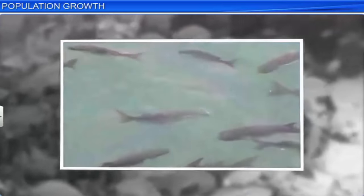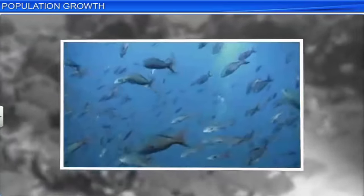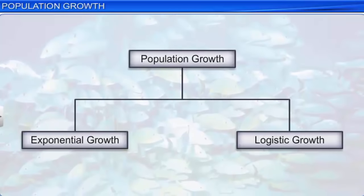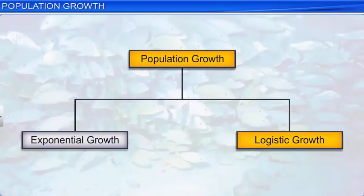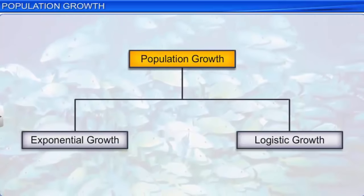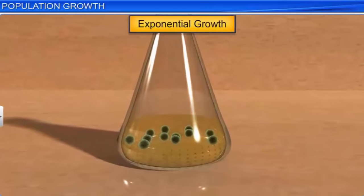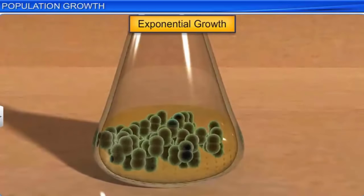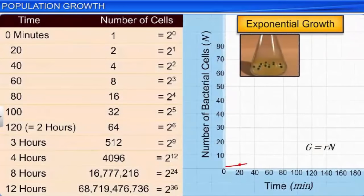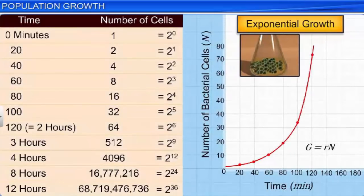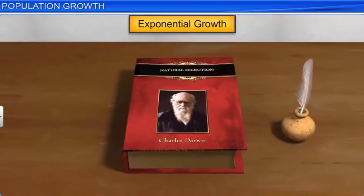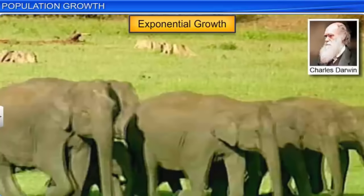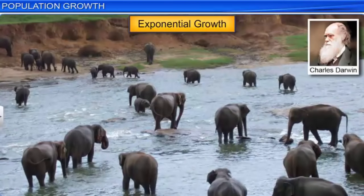Thus, populations grow through births and immigration, and decline through deaths and emigration. Growth is the most fundamental dynamic feature exhibited by populations. Interestingly, population growth exhibits two patterns: exponential growth and logistic growth. When resources available to the individuals in a population are unlimited, there is a tendency of the individuals to grow exponentially, or in a geometric manner. This behavior was observed by Charles Darwin while he was developing his theory of natural selection. He also showed that a slow-growing animal such as the elephant could also reach enormous numbers if resources such as food and space were inexhaustible.